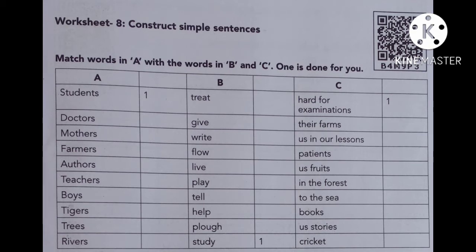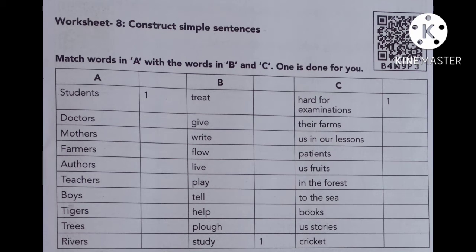In column A you see: students, doctors, mothers, farmers, authors, teachers, boys, tigers, trees, rivers. These are the words in column A. These are the nouns — naming words — and these are the plural forms. These nouns are used as the beginners of the sentence, or we can use these nouns at the beginning of the sentence.